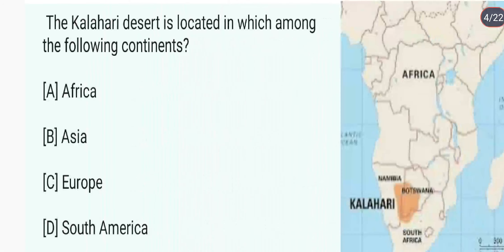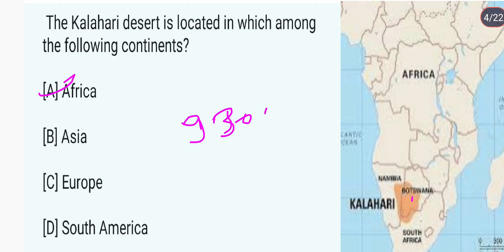The Kalahari desert is located in which among the following continents? Ye Kalahari desert hai Afrika mein. Answer is A. Kalahari desert is a large semi-arid sandy savannah in Southern Africa. Ye Botswana, Namibia, aur South Africa ke parts ko cover karta hai. Iska kul area 9,30,000 square kilometer hai.